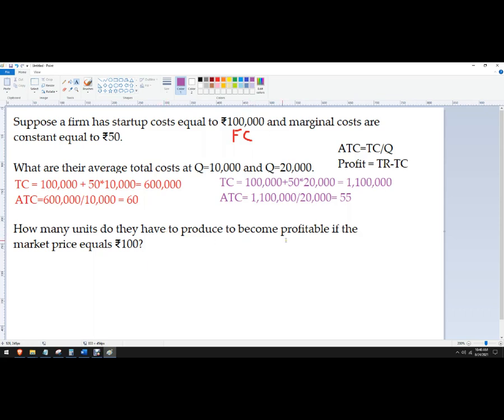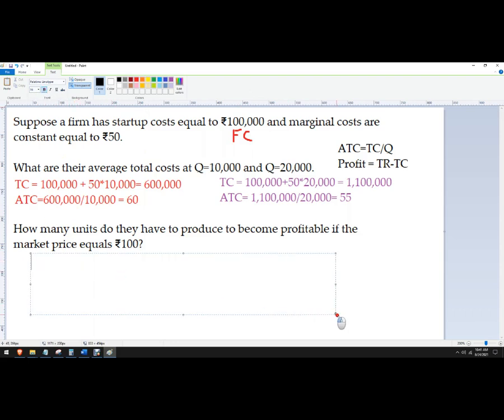How many units do they need to produce in order to become profitable? So I've got this relationship: total revenue equals total cost. Total revenue is price times quantity. So we were told that the price is ₹100. So let's do this in black, and we'll do this in bold so it's a little easier to see.